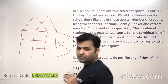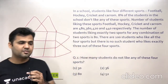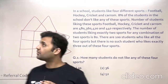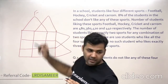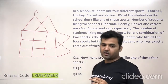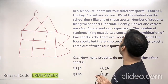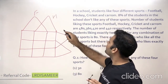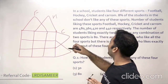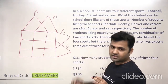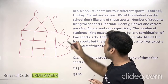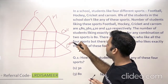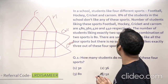Now, the four different sports are: football — let's write football here — hockey, cricket, and carom. So we label each of the four regions with one sport.